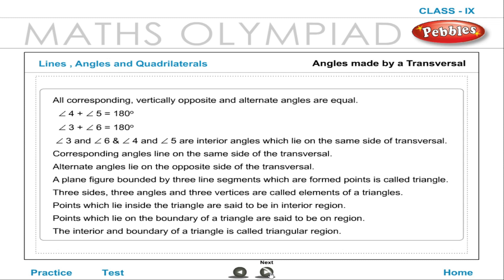A plane figure bounded by three line segments formed by three points is called a triangle. Three sides, three angles, and three vertices are called the elements of a triangle. Points which lie inside the triangle are in the interior region, and points which lie on the boundary are on the boundary region. The interior and boundary together form the triangular region.